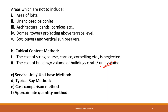The next method is the Service Unit method, also called the unit base or unit rate method. In this method, the cost of a unit quantity is considered first — such as per kilometer for a highway, per meter span for a bridge, per classroom for a school, per bed for a hospital, per liter for a water tank — and the estimation is prepared by multiplying that unit cost by the number of units.